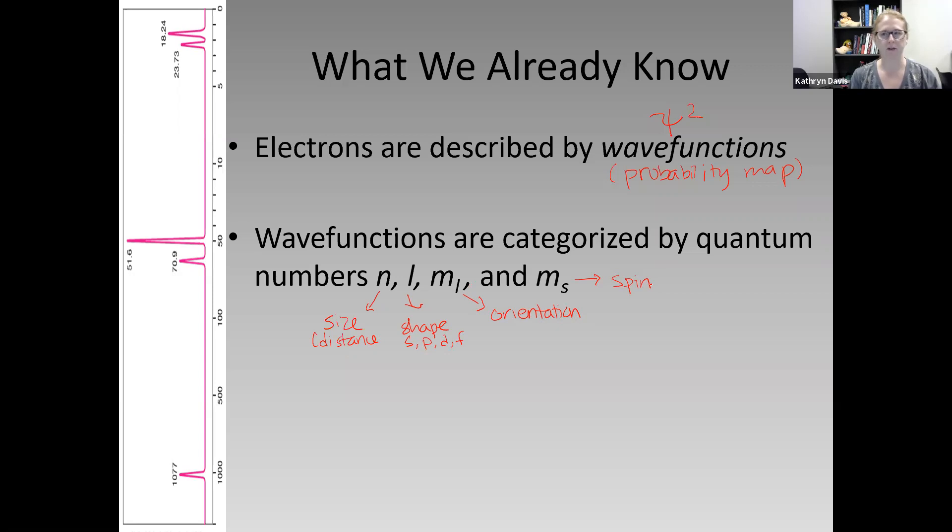Taken together, we can start building those into a description of where all the electrons are in any given atom. That's all that electronic structure needs. Electronic structure is where are the electrons, what orbitals are they in, and how are they occupied.